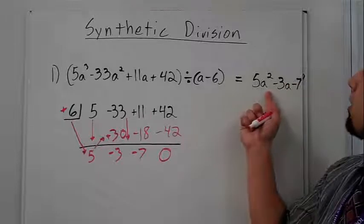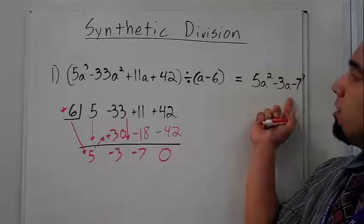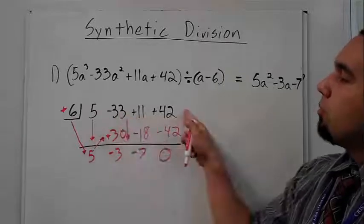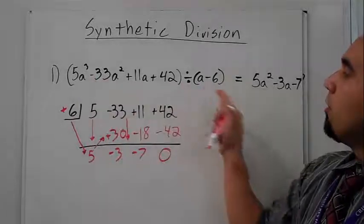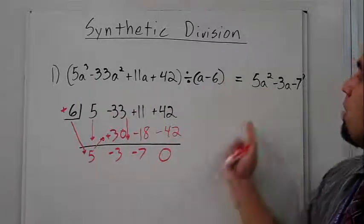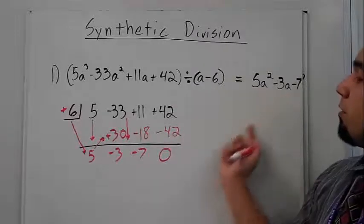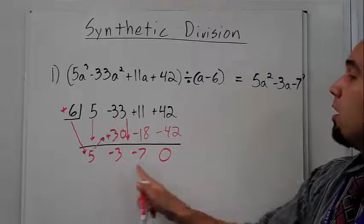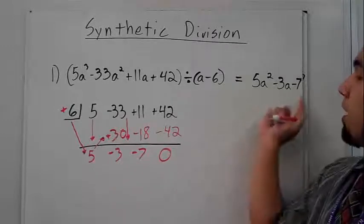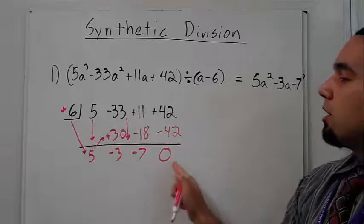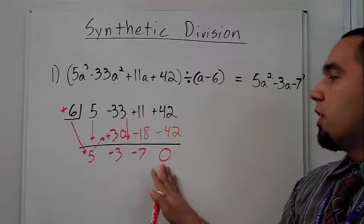And if you look at our answer, the answer is basically the same exact form of our problem written without the exponents. So I got a five first. My first term is five a squared. My second term is negative three a. I got a negative three. And my third term is a negative seven, which is my constant. And this is a zero because it goes in evenly. So this isn't an actual term.